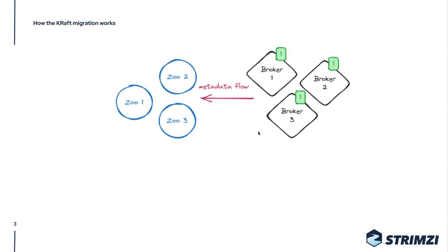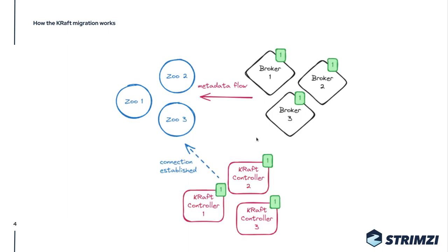The first step for the migration is deploying the KRaft controllers. We are going to deploy three KRaft controllers to replace our three-node ZooKeeper ensemble. At startup, these controllers are configured to be connected to ZooKeeper — they have the ZooKeeper connection details and the ZooKeeper migration flag enabled. As soon as they start, nothing happens because the KRaft controllers are waiting for the brokers to register.